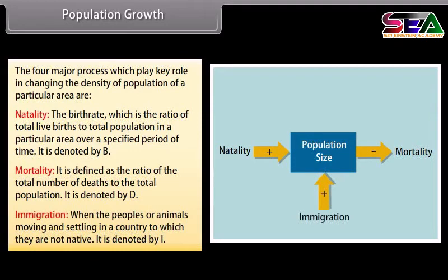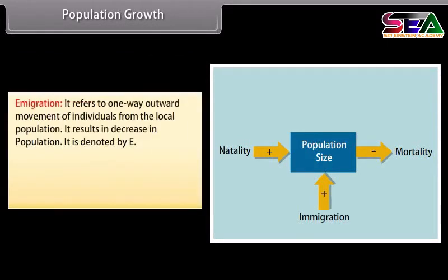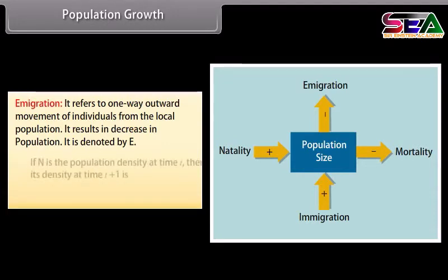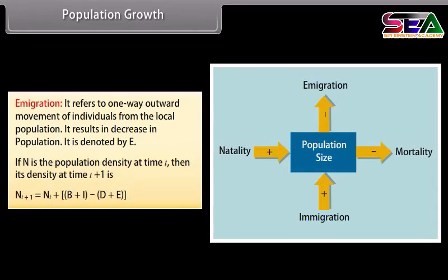Immigration is the movement of individuals into a population from outside, denoted by I. Emigration refers to the outward movement of individuals from the local population, resulting in a decrease in population, denoted by E. If N is the population density at time T, then its density at time T+1 is: N(T+1) = N(T) + B + I − D − E.